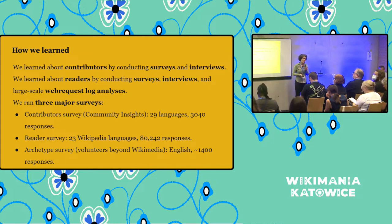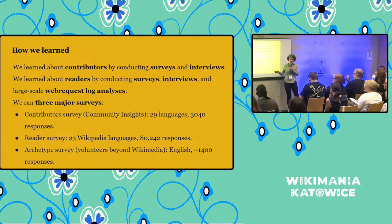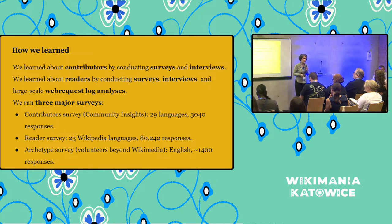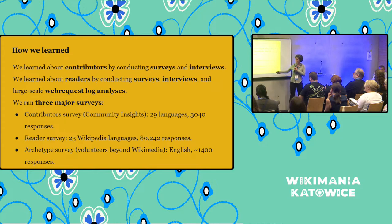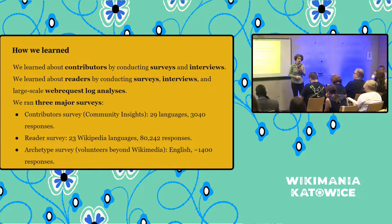The contributor survey — some of you know it as community insights. If you participated in it, thank you. You're going to see part of the fruit of your labor in this presentation. We ran it in 29 languages and more than 3,000 contributors participated. The reader survey was run in 23 Wikipedia languages; more than 400,000 people started the survey and 18,000 people finished it, so we have complete responses from them. And there's the archetype survey — a new project. We were trying to understand who are the people outside of the Wikimedia projects who may want to join us, so we're trying to learn their motivations. That survey was run in English only and around 1,400 people participated.